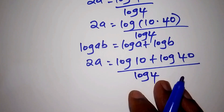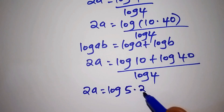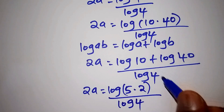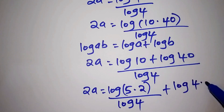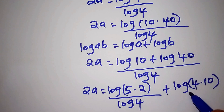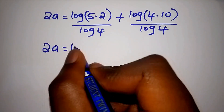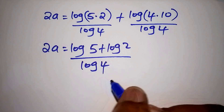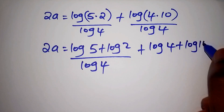Let us now simplify it completely. So 2A is equals to: log of 10 can be written as log of 5 multiplied by 2, divided by the log of 4, plus the log of 40 written as log of 4 multiplied by 10, all over the log of 4. Expanding further, we shall have log of 5 plus log of 2, all over the log of 4, plus log of 4 plus log of 10, all over the log of 4.